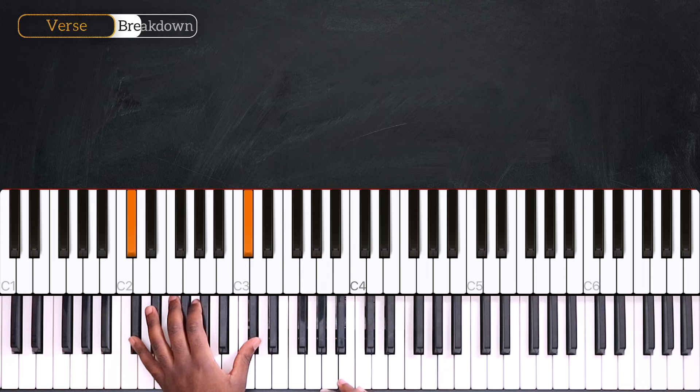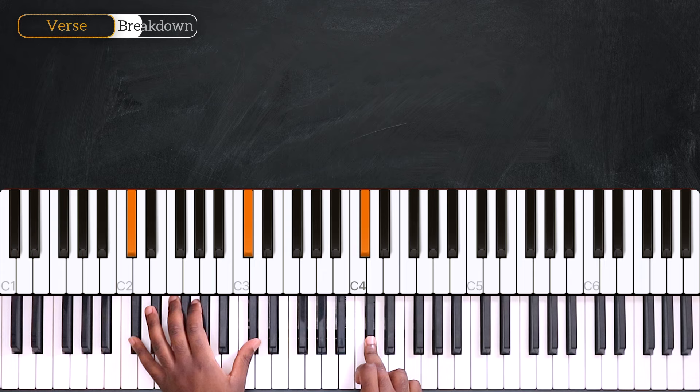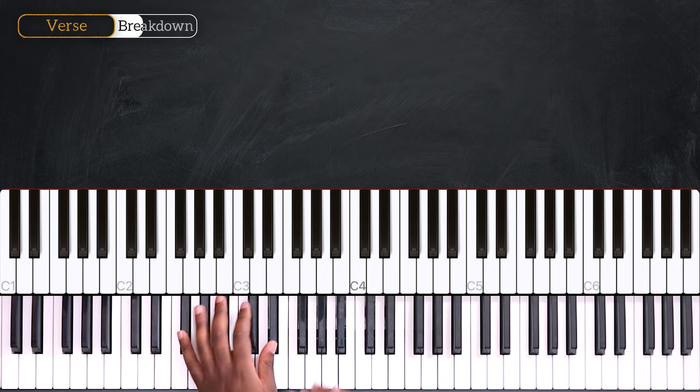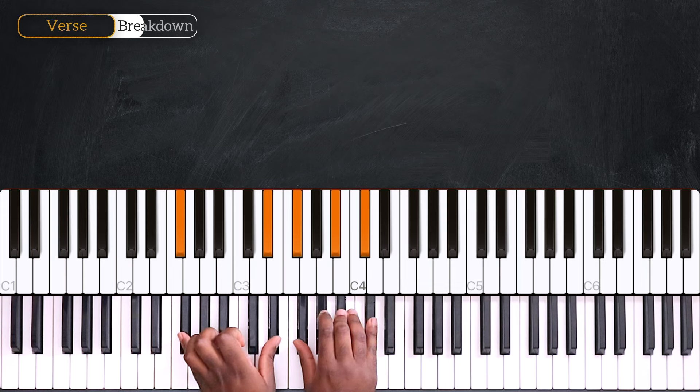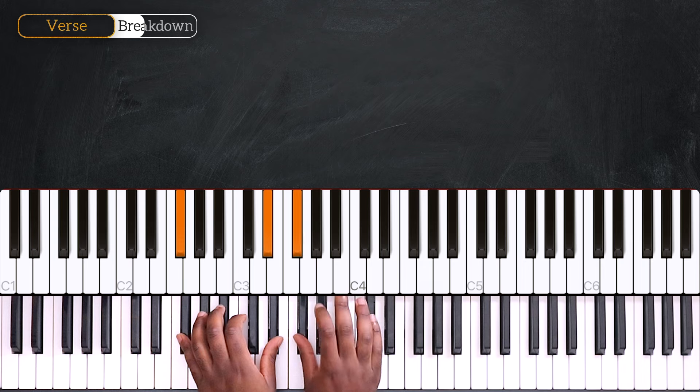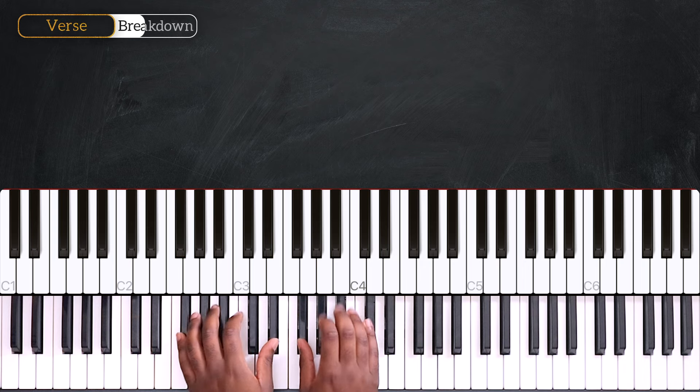Then I played one Db using my right hand, going up directly on Gb. I'm playing it as a Gb6 chord. So, I'm playing Gb and Eb, playing Gb, Bb and Db on my right hand.